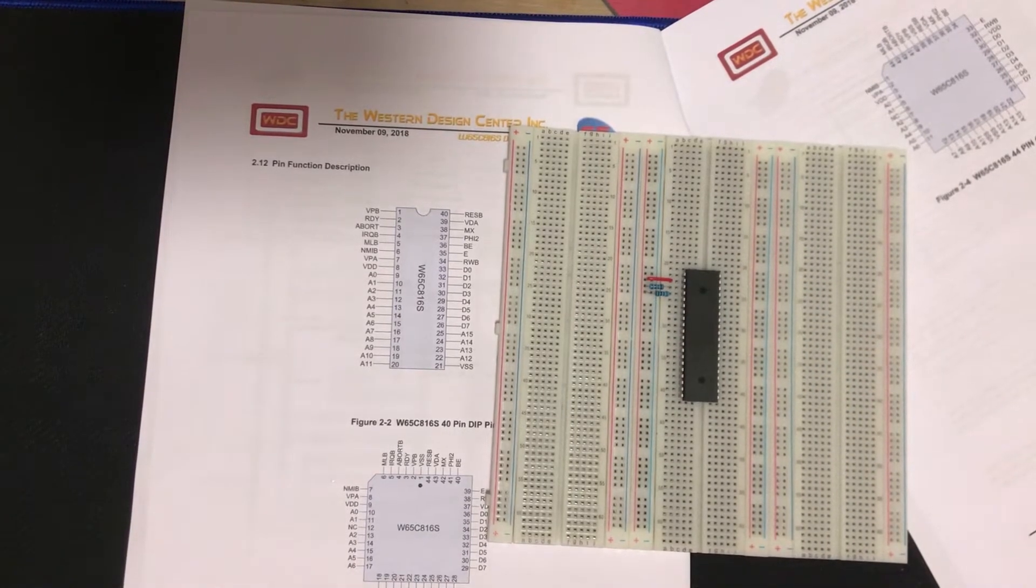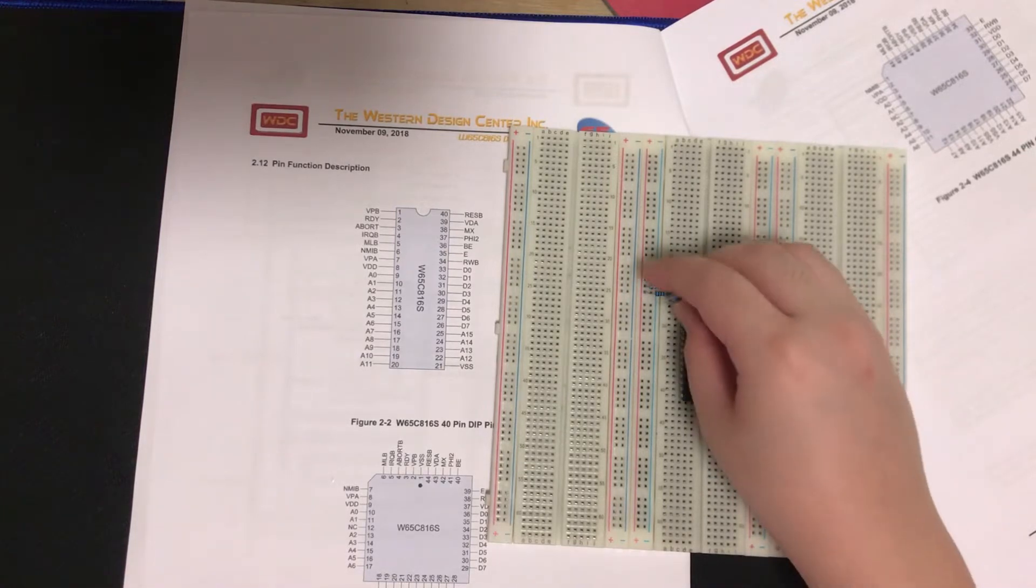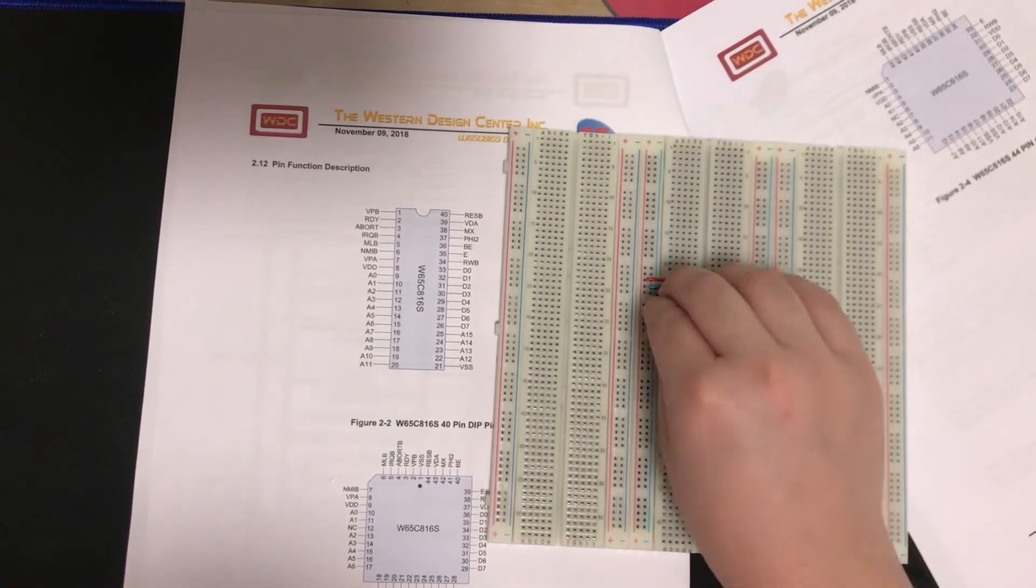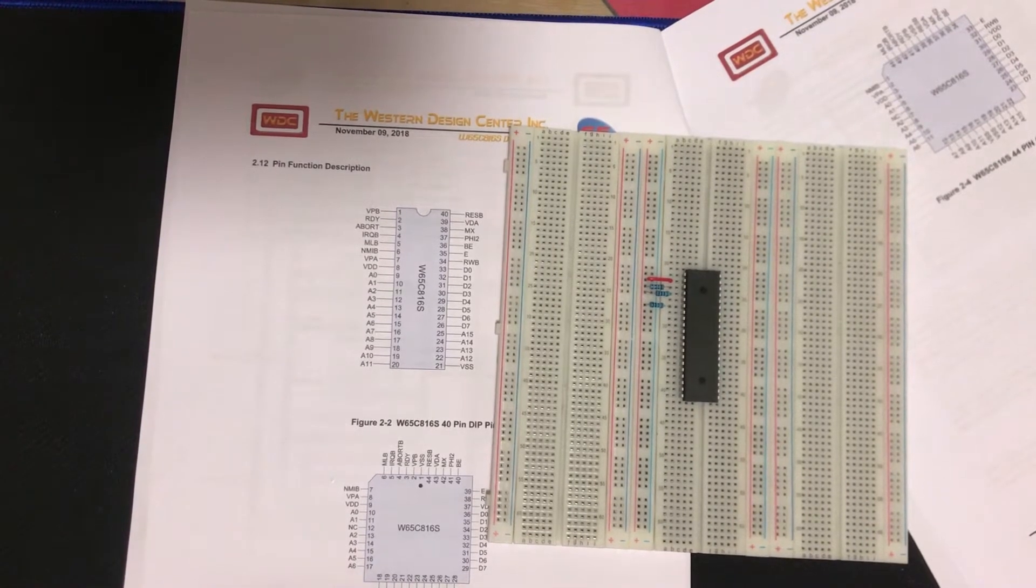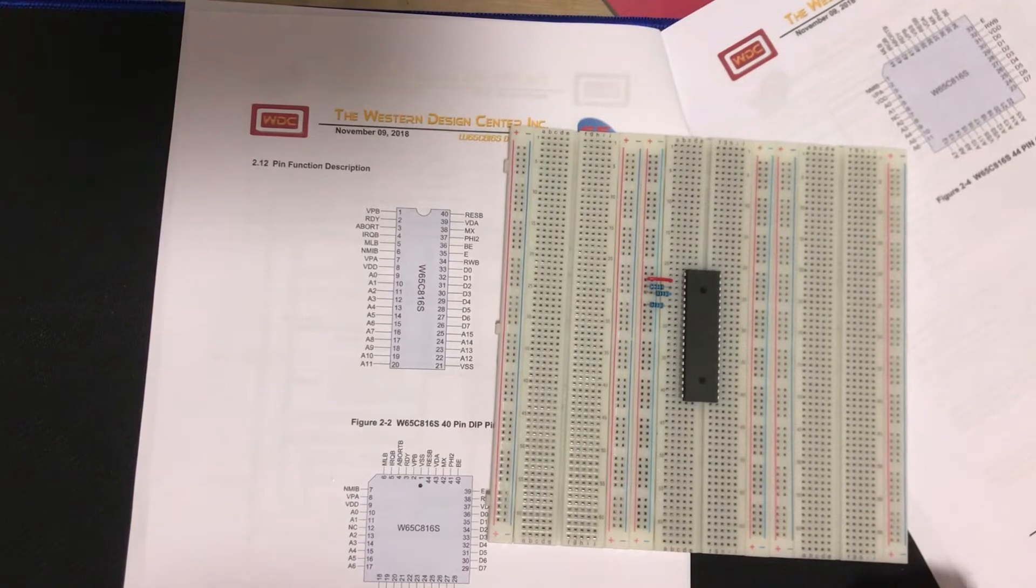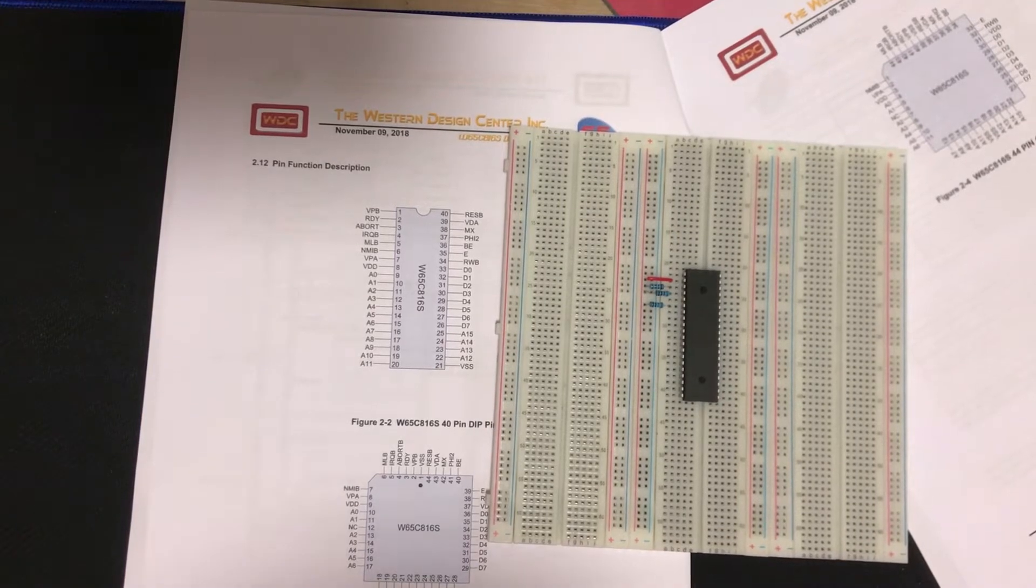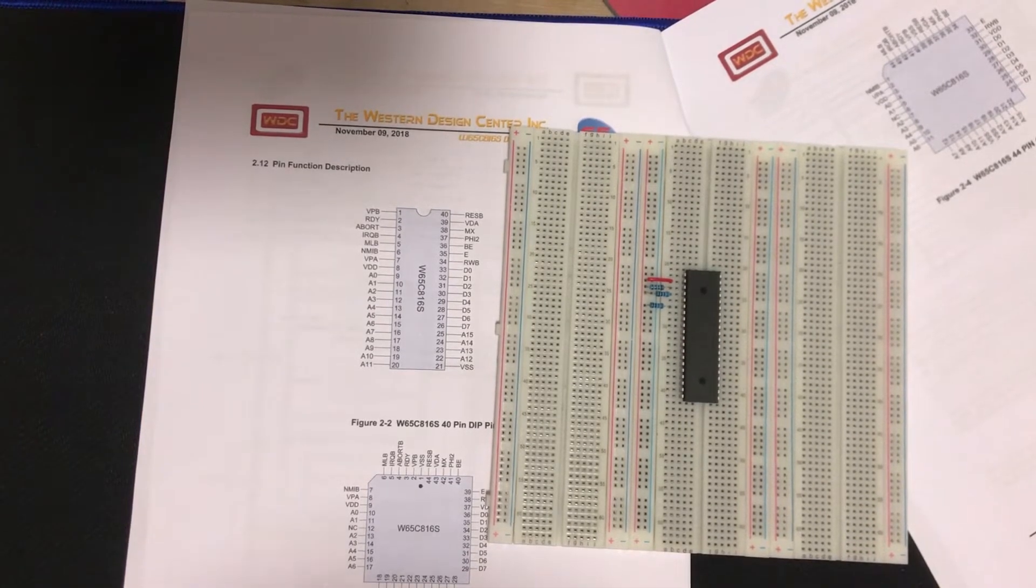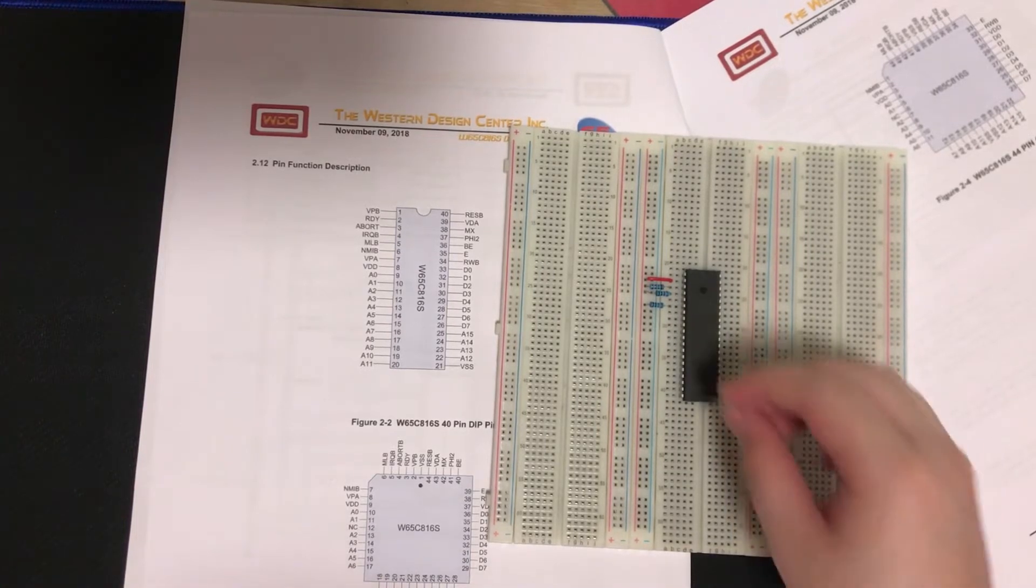The next pin is MLB, or memory lock. This is an output pin, and we don't need to care about this. The next pin is NMIB, or non-maskable interrupt request. This is an inverting input. But for our purposes right now, we can just tie that high using a 1K resistor as well. The next pin is VEDA program address. This is very useful for some projects that you might need it for, because this is used to signal other peripherals that the address is actually valid. For now, we don't really need it because we can just do some timing calculation. That's an output pin. And then the next pin is VDD. This is our positive power input supply.